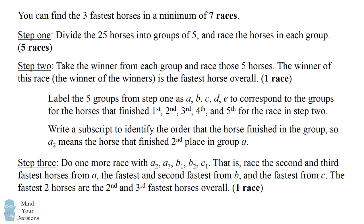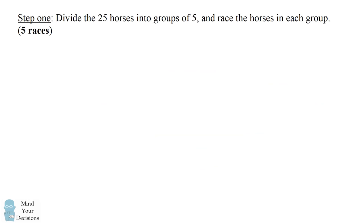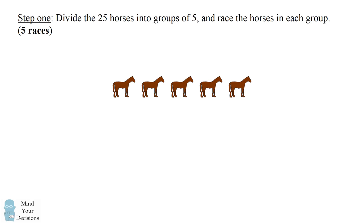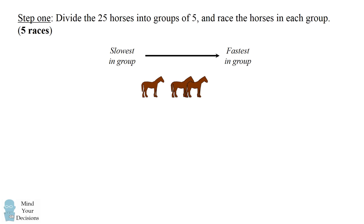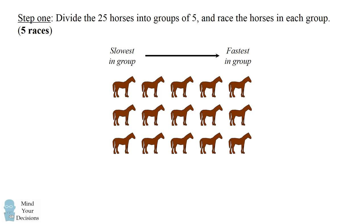Now I'm going to show you this procedure in detail and explain why it is the correct procedure. We start by dividing the 25 horses into groups of five. In each race I'll illustrate it so that the slowest horse is on the left and the fastest horse is on the right. I'll rearrange the horses if necessary so that it follows that convention. I'll do this for all the horses in all of the different groups.